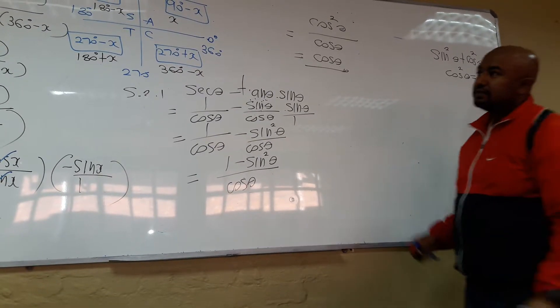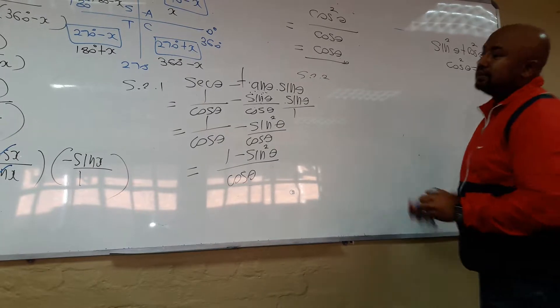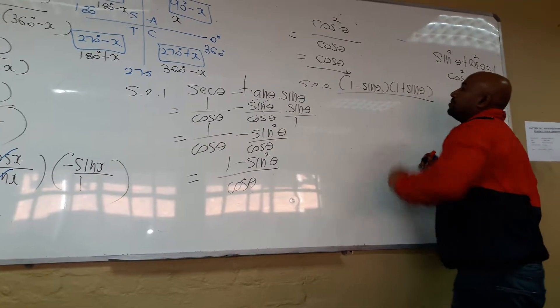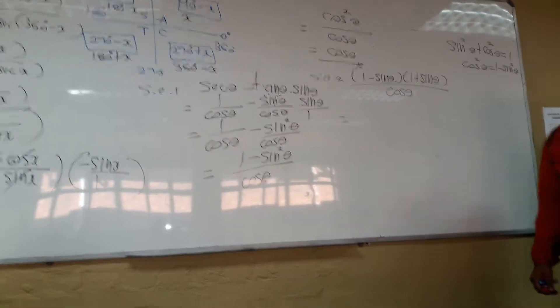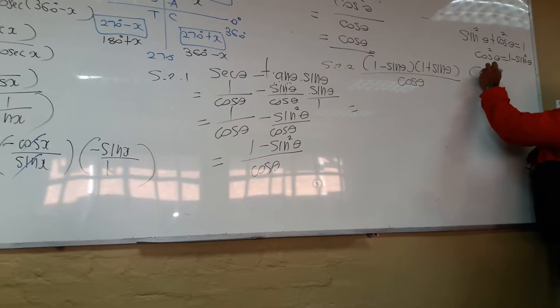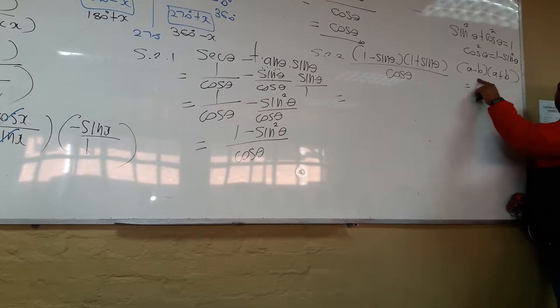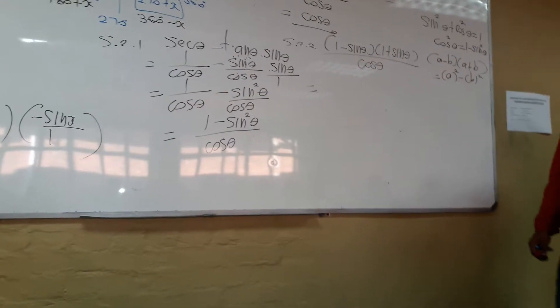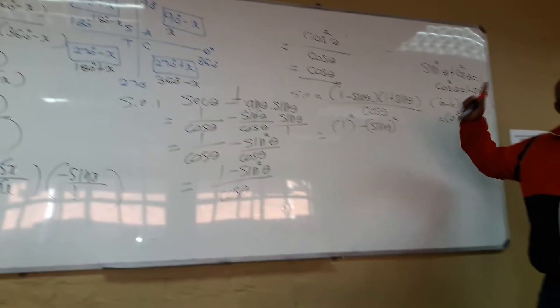Let's deal with the next one. That is the next one there. 5.2.2. A minus B, A plus B is the difference of two squares. So therefore it is A squared minus B squared. So therefore this will be 1 squared minus sine squared.